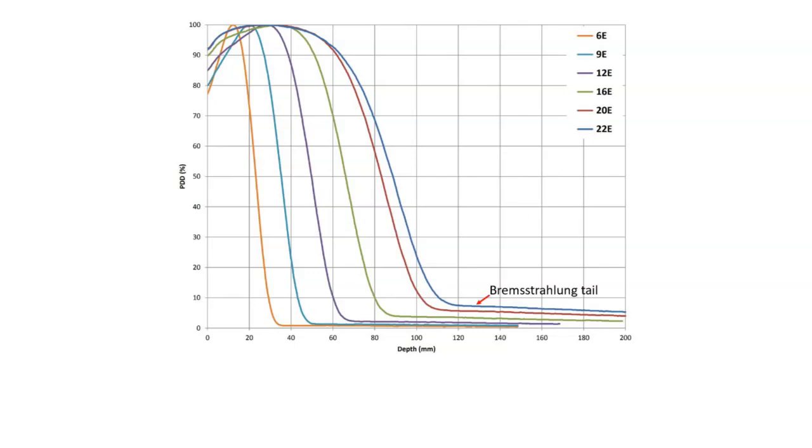A couple general rules with electron beams. One is that the range is roughly equal to the energy divided by two. So R stands for range here, and you just take your beam energy in MeV and divide it by two, and that should approximately give you the range. So if you look at this 6E beam here, this orange curve, six divided by two is three, and you can see that the range is about three centimeters. So it's just a general rule. And it really comes from the fact that electrons lose about two MeV per centimeter in water, or human tissues, roughly water equivalent.